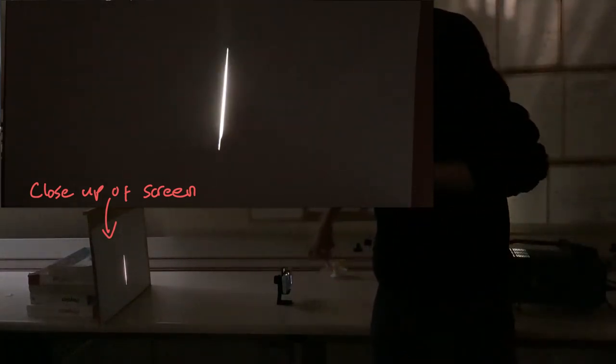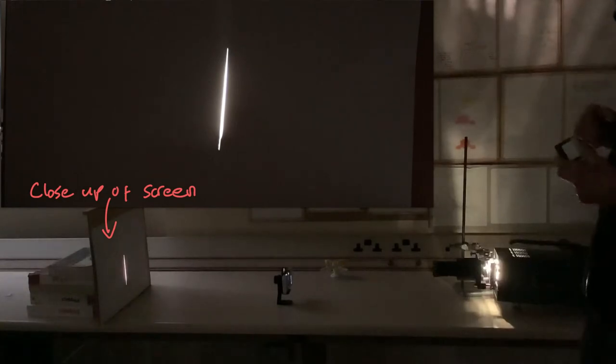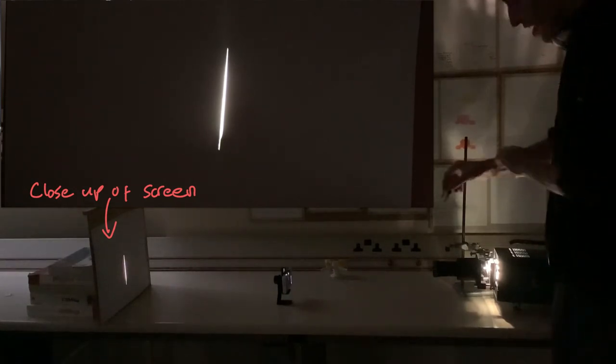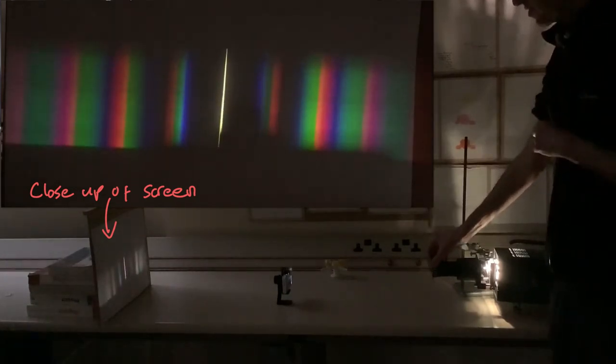And I've got another camera down here directed at the screen directly so you can see what happens. So first of all I'm going to put an 80 lines per millimeter diffraction grating in front and there you can see several orders of fringes showing beautiful spectra.